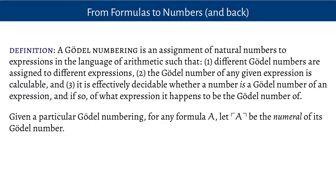The important thing for us is that, given any Gödel numbering, the Gödel number for a formula is a number. So in the language of arithmetic, we've got a name for that number — the numeral for that number. That means for any formula in our language, call it A, there is a number in the language which kind of represents A. It's the code for A. We'll represent that not by writing out a big long number, but just by writing A with these funny-looking corner quotes.